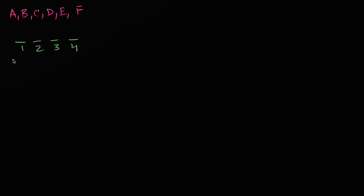Well, for the first chair, there'd be six possibilities. For each of those six possibilities, there'd be five possibilities of who we put in the second chair because one person's already sitting down. For each of these 30 possibilities of seating the first two people, there'd be four possibilities for chair number three, and for each of these 120 possibilities, there would be three possibilities for chair four.